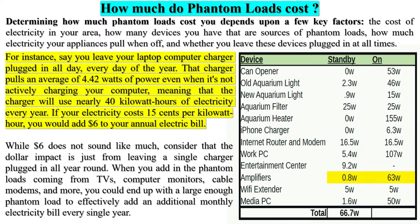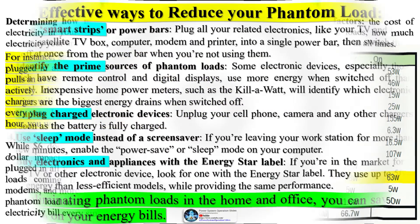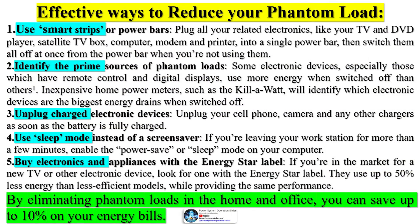Appliances have a phantom load for several reasons. One, quick start: phantom loads allow for instant-on functionality in appliances and devices that require a warm-up period. For example, a tube TV took several seconds to warm up fully and display the picture clearly, so manufacturers designed the tubes to stay in a sort of pre-warm state so when you flipped the TV on, it didn't feel like you were waiting for a heater to warm up.